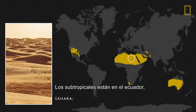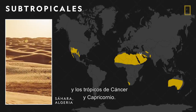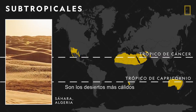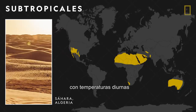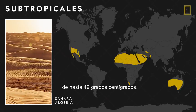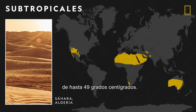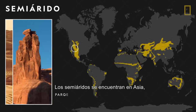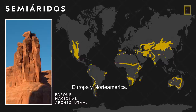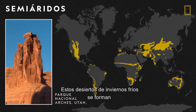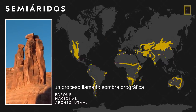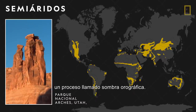Subtropical deserts are found along the equator in the Tropic of Cancer and the Tropic of Capricorn. They are the hottest deserts on Earth, with daytime temperatures that can reach up to 120 degrees Fahrenheit. Semi-arid deserts are located in Asia, Europe, and North America. These cold winter deserts often form when tall mountain ranges block moisture through a process called the rain shadow effect.